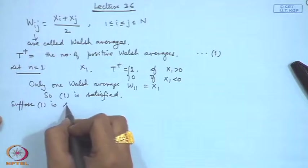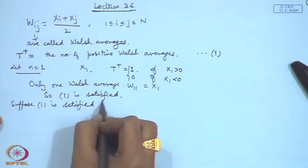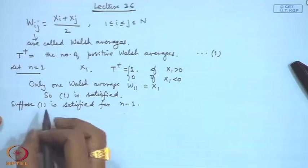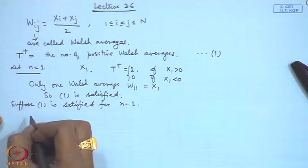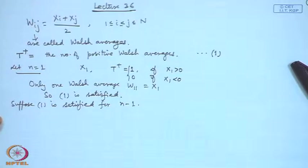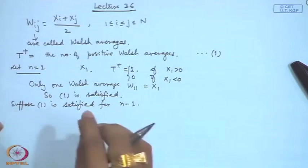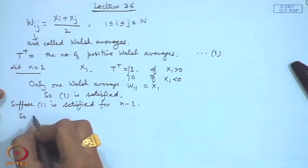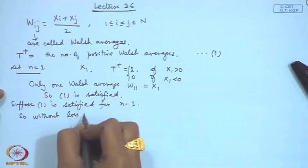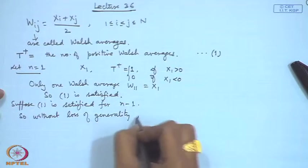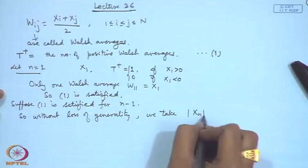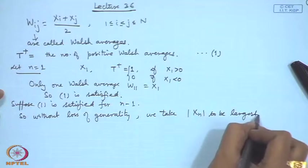Suppose statement 1 is satisfied for n−1. Now we add x_n, and we consider |x_n|. Without loss of generality we take |x_n| to be the largest in absolute value. If it is not the largest, we can consider another permutation in which it becomes the largest. Since we are assuming statement 1 holds for n−1, it will hold for any permutation as well.